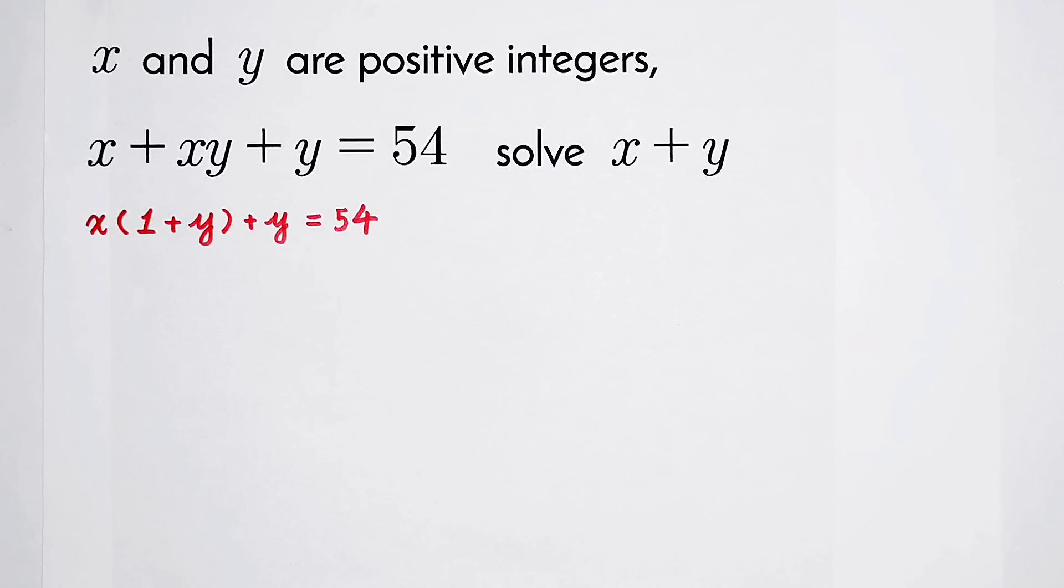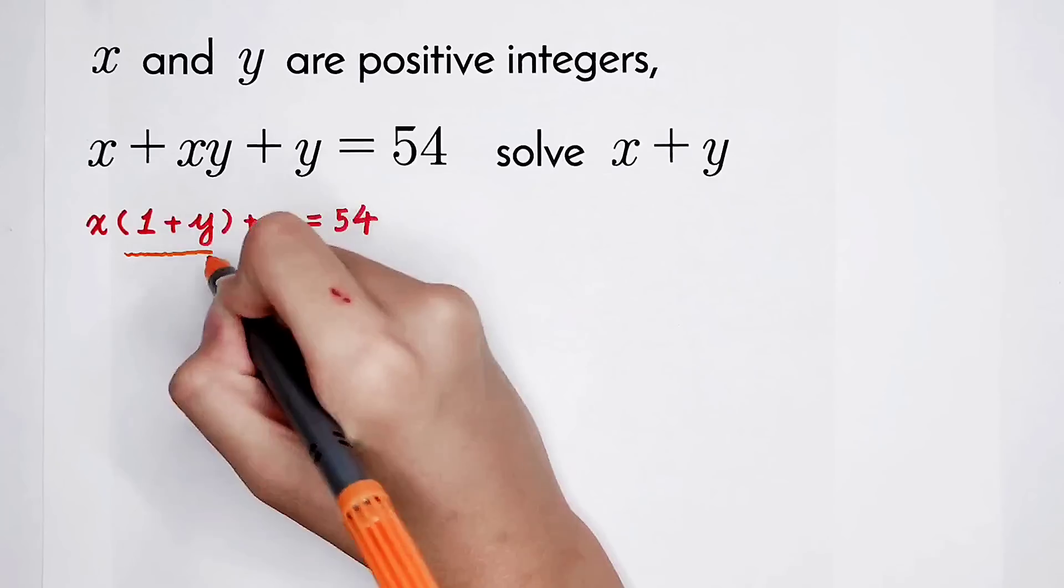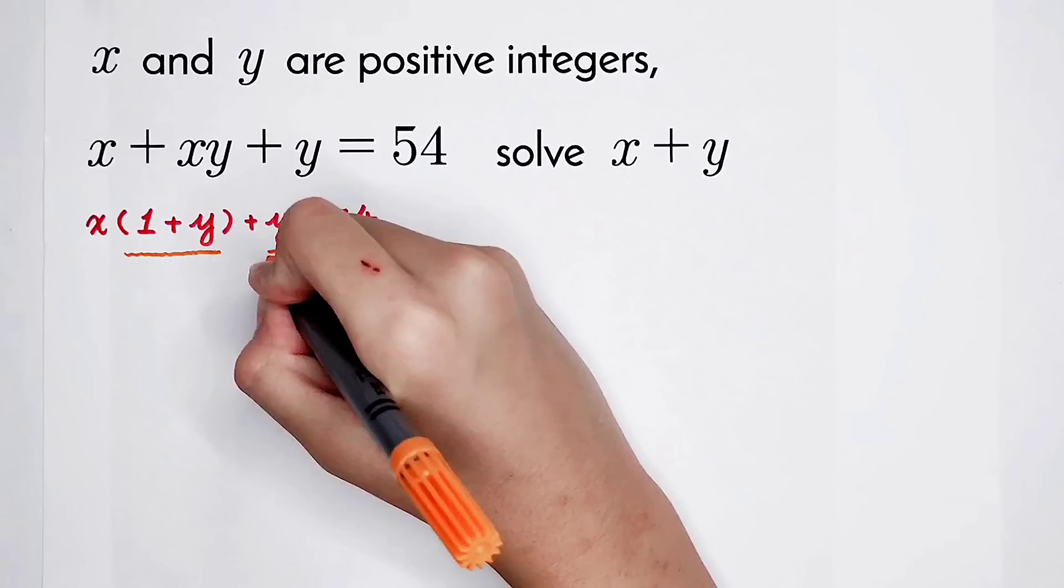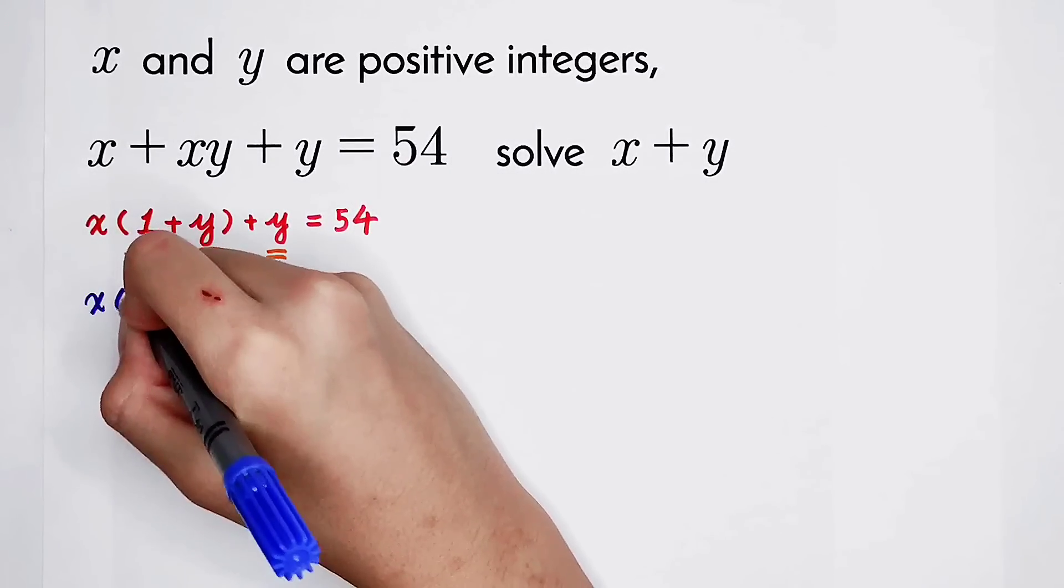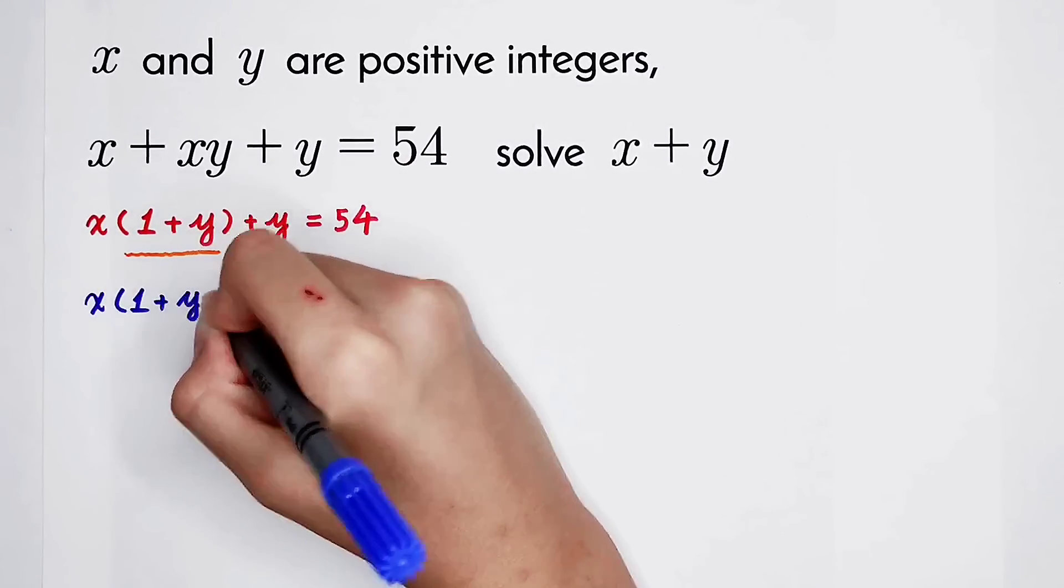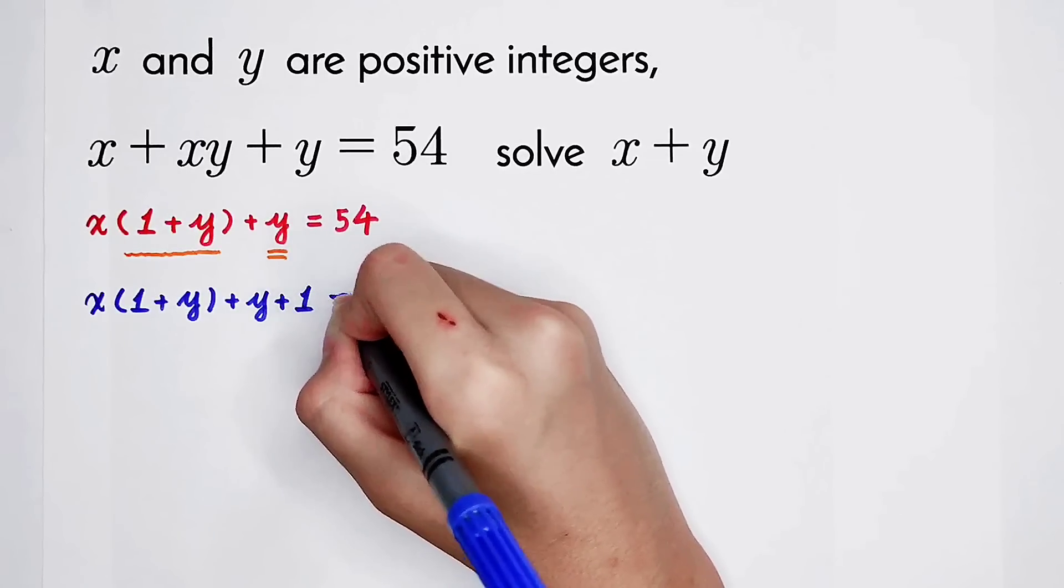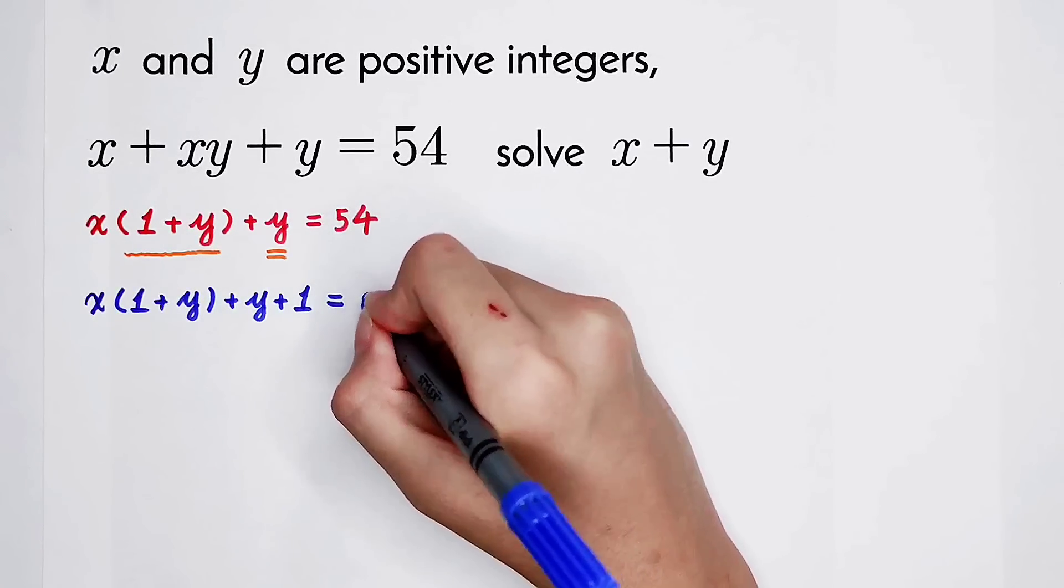If we want to find the factor, if we want to take out something, we have to take out 1 plus y when we can continue to factor. But now, here is just a y left. So now, I'm going to add 1 on the left hand side and also on the right hand side.